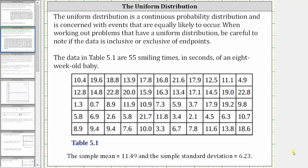Welcome to a lesson on the uniform distribution. The uniform distribution is a continuous probability distribution and is concerned with events that are equally likely to occur. When working out problems that have a uniform distribution, be careful to note if the data is inclusive or exclusive of endpoints.